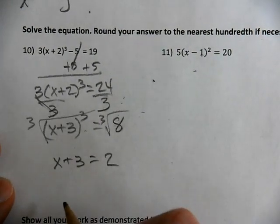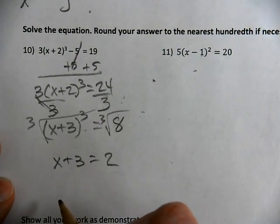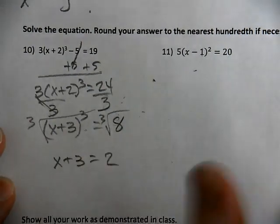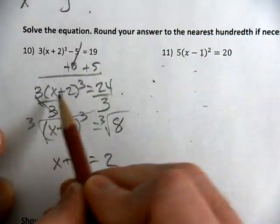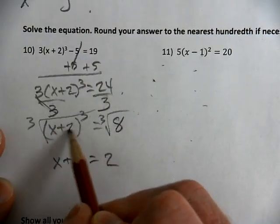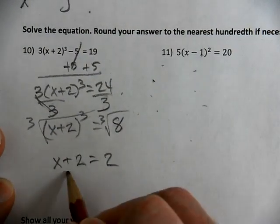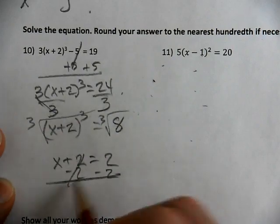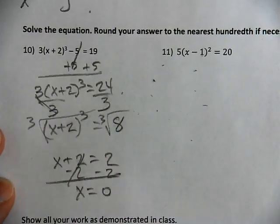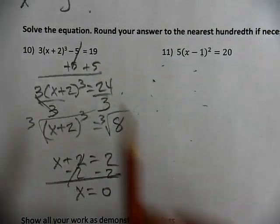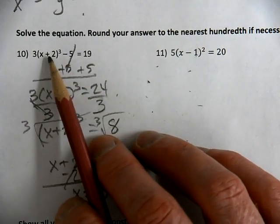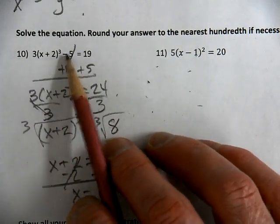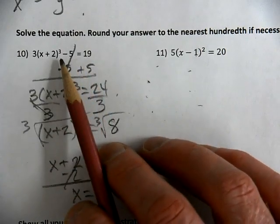I'm sorry. I changed my numbers. This is x plus 2, this needs to be x plus 2, minus 2, and I get 0. Because when I plug in 0, 0 plus 2 is 2, cubed is 8, times 3 is 24, minus 5 is 19. I checked my answer.